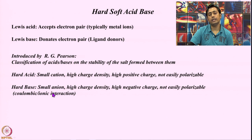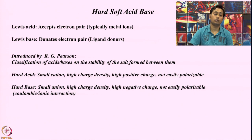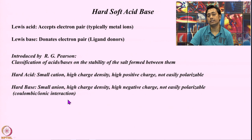Similarly, a hard base is the anionic counterpart. It is a small anion with some charge such that the charge density is pretty high, and it is also less polarizable. These kinds of systems tend to come together and form a very stable salt. The hard acid and hard base interact with each other because their non-polarizable nature keeps their charge very distinct, and those two charged systems — the hard acid cation and the hard base anion — come together through coulombic or ionic interaction. That is why hard acid-hard base systems are very stable.